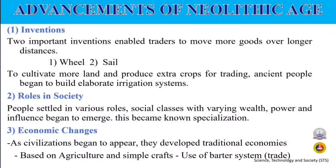This became known as specialization — the development of skills in a specific kind of work. As populations grew, these early settlements began to evolve into powerful civilizations. Third, economic changes: as civilizations appeared, they developed traditional economies based on agriculture and simple crafts, and the use of a barter system or trade.